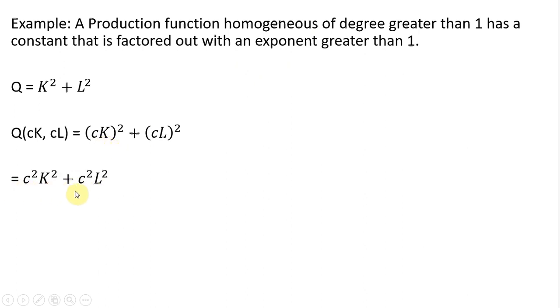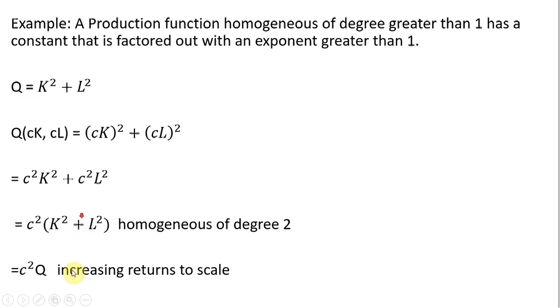Simplifying. Rewriting by factoring out that C squared. In parentheses here, we just got Q, so we could write it like this. And this would be increasing returns to scale. If we were to double our inputs, our output would more than double in this case.